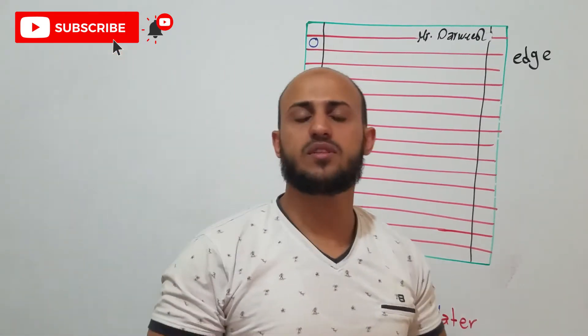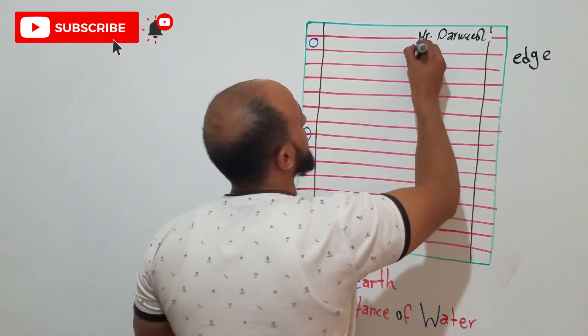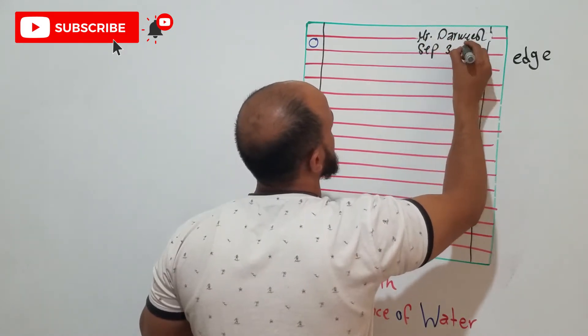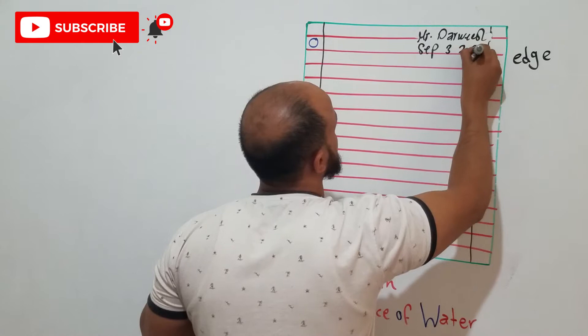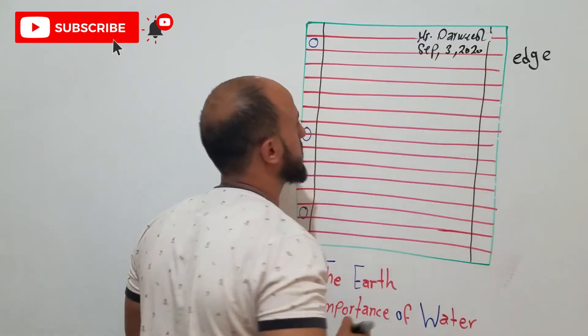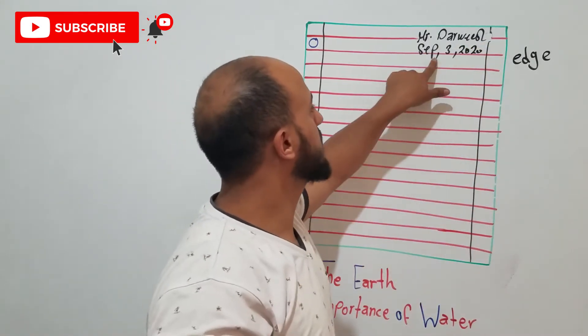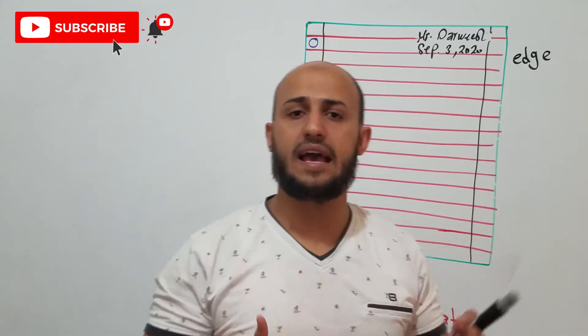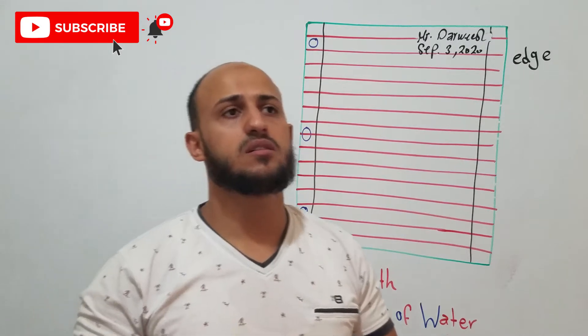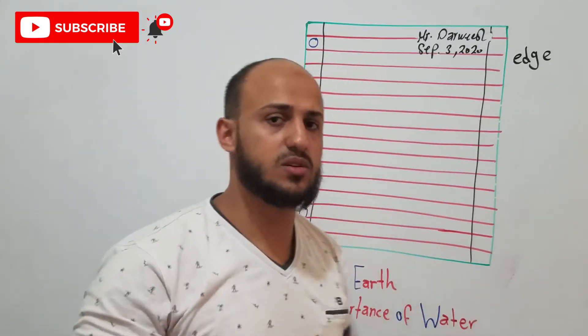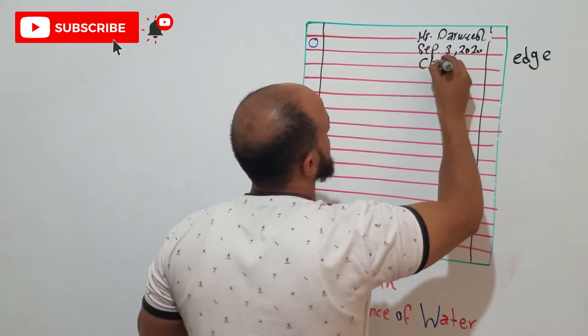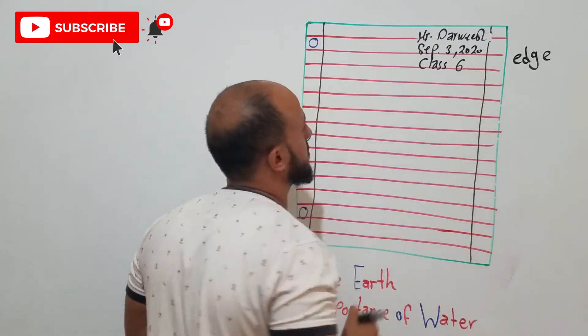Next, we talk about the date. So today, SEP 3rd, 2020. This one is no need for it. Next, course number, or class number, or the name of your level, or whatever. So for example, here you say class 6.